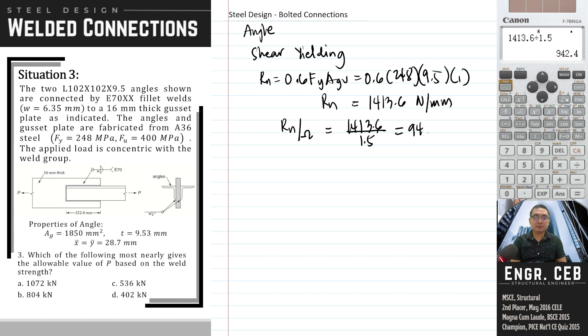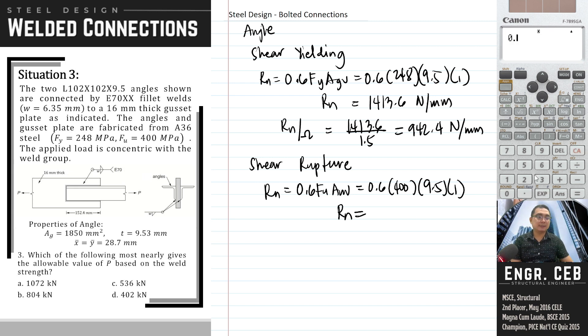Next is shear rupture. Rn equals 0.6 Fu Anv, that is 0.6 times 400 times 9.5 times 1. So Rn for shear rupture is 2280 N/mm. Compute the allowable by dividing the nominal by the factor of safety for shear rupture which is 2. This becomes 1140 N/mm.